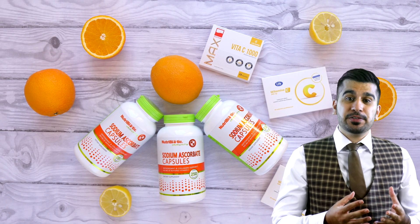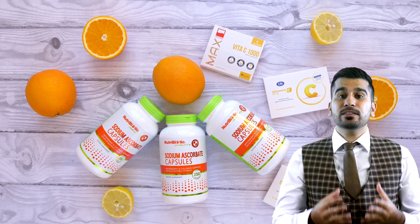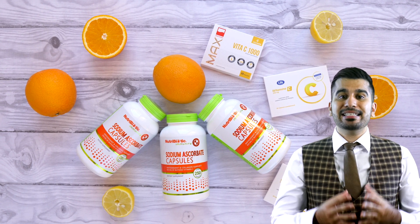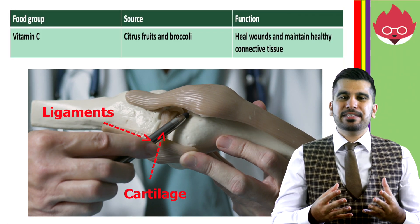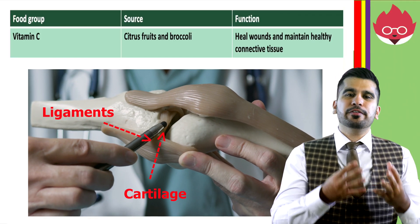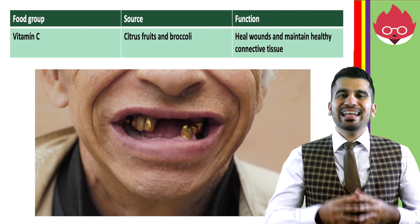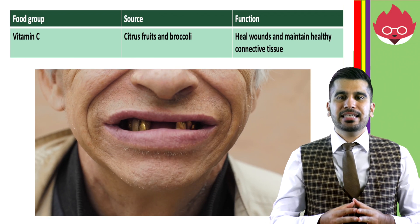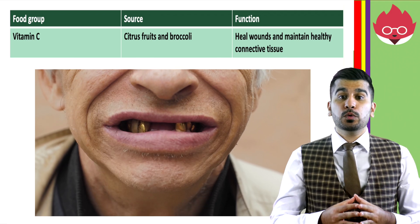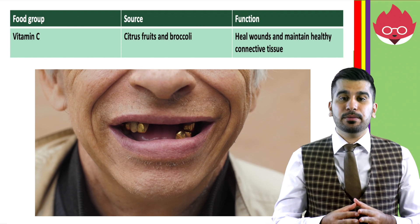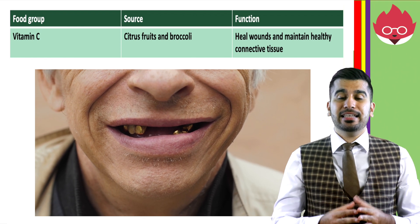Vitamin C, found in citrus fruit and broccoli, helps heal wounds and maintain healthy connective tissues. When we talk about connective tissue, we refer to ligaments, cartilage, and tendons. A lack of vitamin C can cause a disease called scurvy, which causes painful joints and bleeding gums. It was a common disease among sailors.